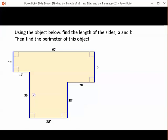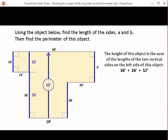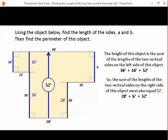So if we look at the far left-hand side, we can see that we have 36 feet for the lower vertical line, 16 feet for the upper vertical line, and that gives us a total of 52 feet. So from the bottom of this object to the top, the distance is 52 feet. Using the far right-hand vertical lines, those lengths must also add up to 52 feet.